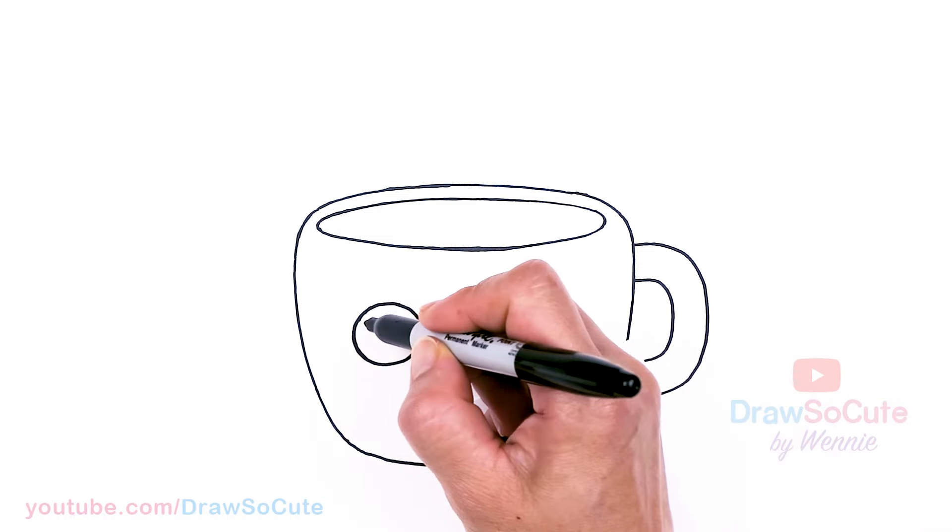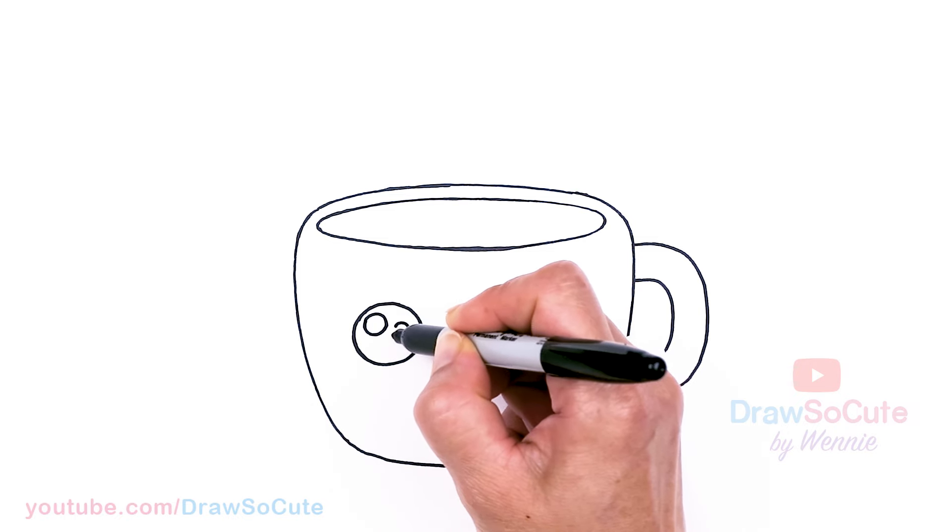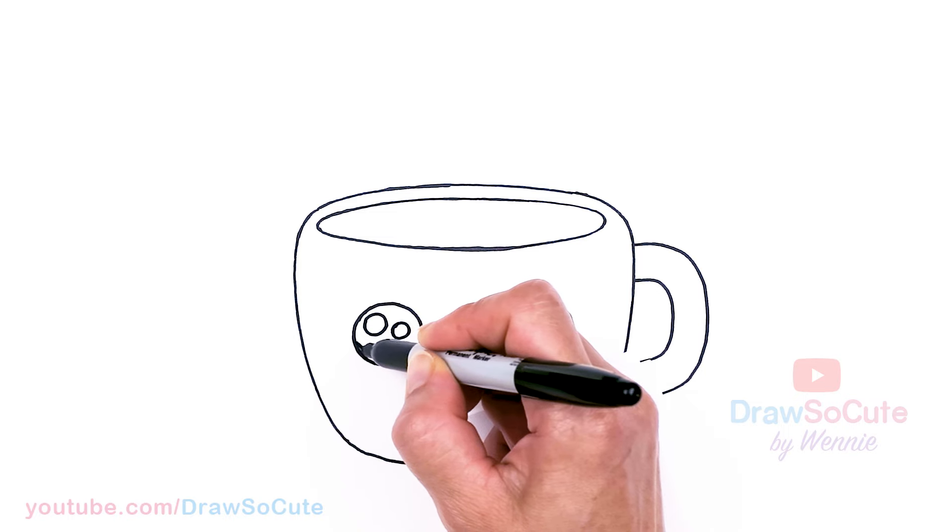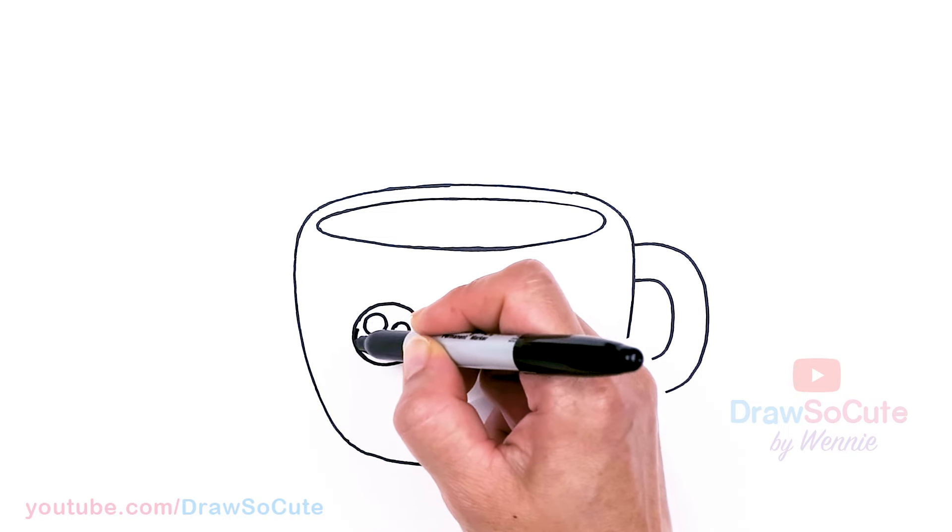So my two circles in. Let's make them Draw So Cute eyes with two small circles inside for highlights and a curved line at the bottom. And shade in the top.